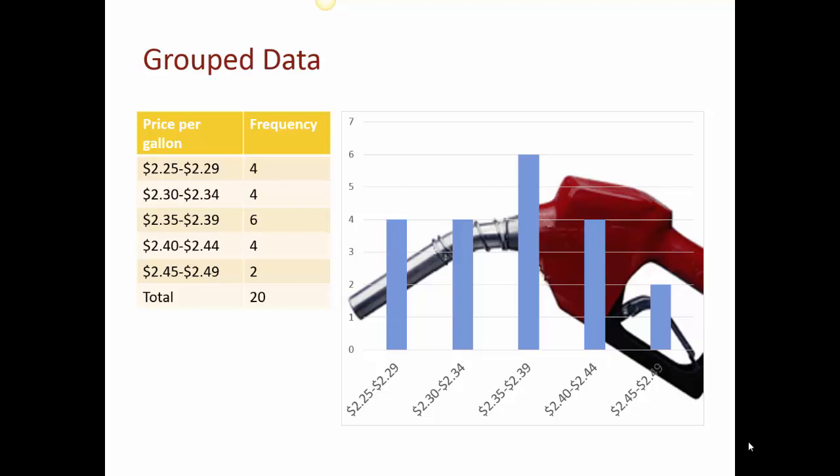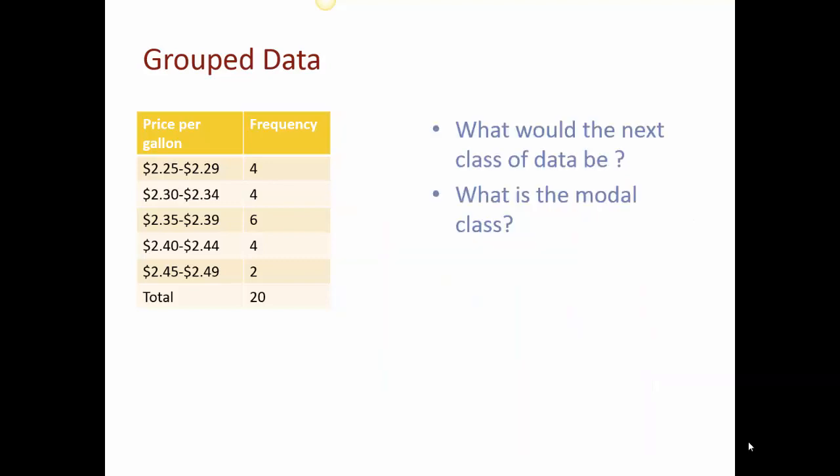So I have a 4, 4, 6, 4, and 2. So some of them about the same, 4, 4, 4, but that 6 definitely my high, my modal class. And then I definitely had a low at 245 to 249. You can also see I put this together as a histogram or a bar chart, which I also draw to the fact that that 6 happens the most. And then from 235 to 239, and then you can see what happens the least. And the other ones are pretty much the same.